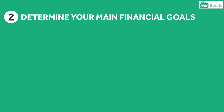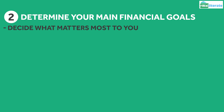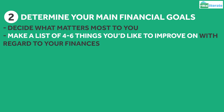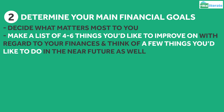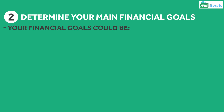Step 2: Determine your main financial goals. Now that you've taken a good look at your current finances, it's time to determine what matters most to you. You'll want to make a list of four to six things you'd like to improve on with regard to your finances, and think about a few things you'd like to do in the next few years. Your financial goals could look like a few different things.